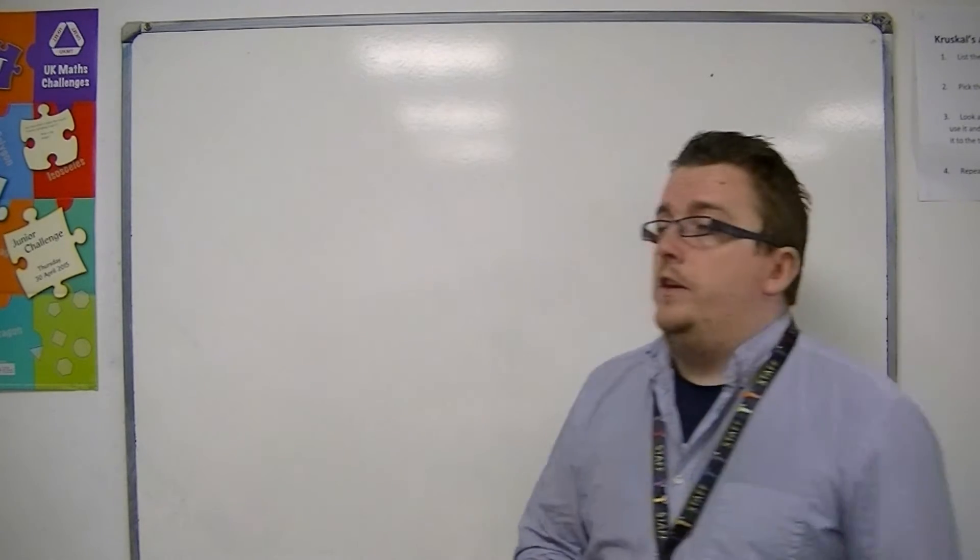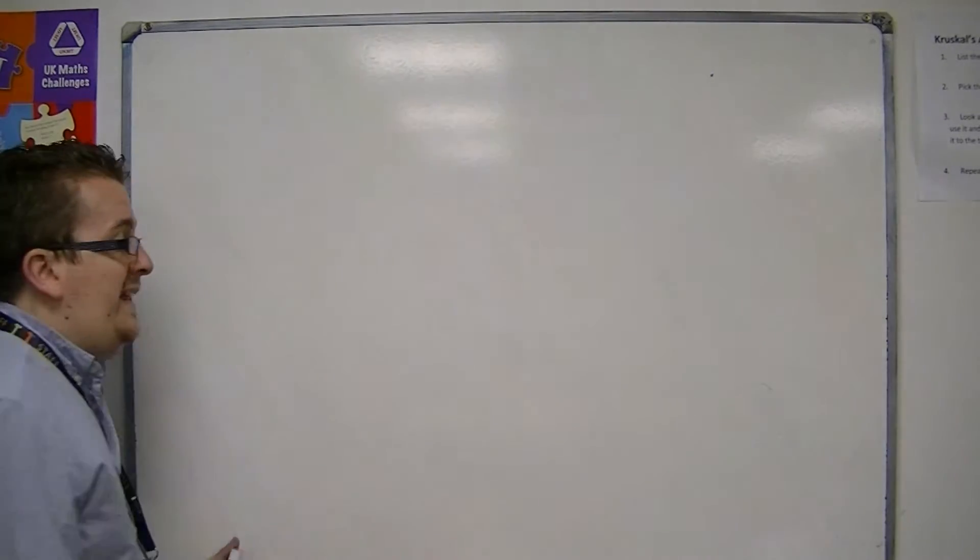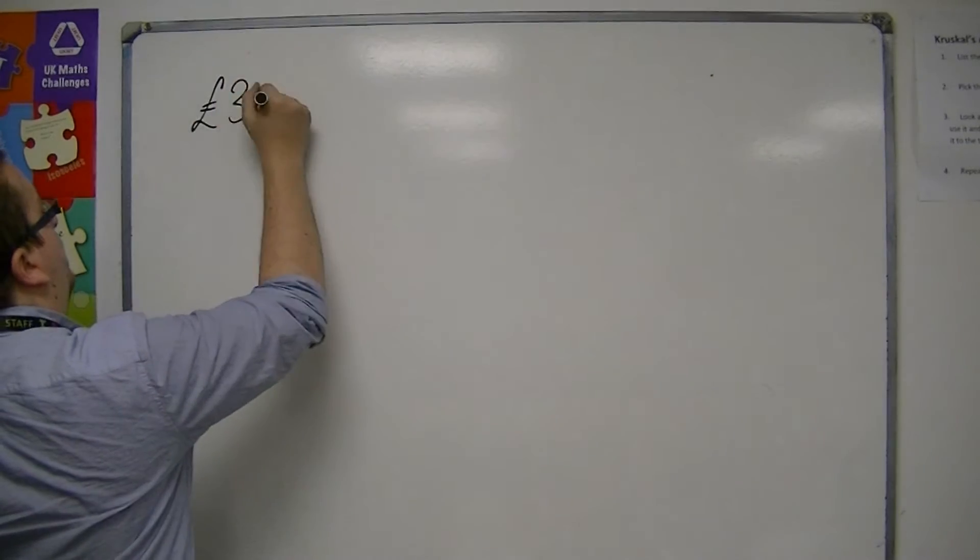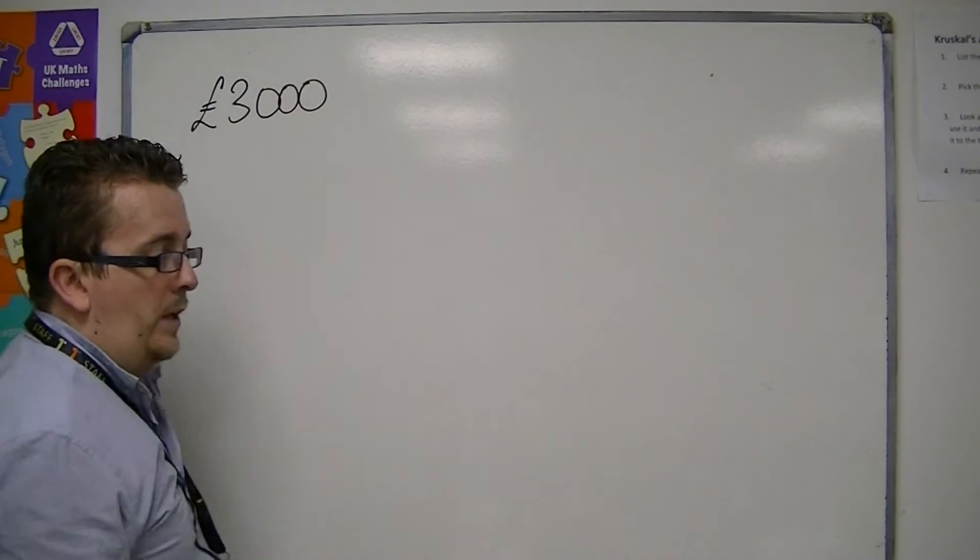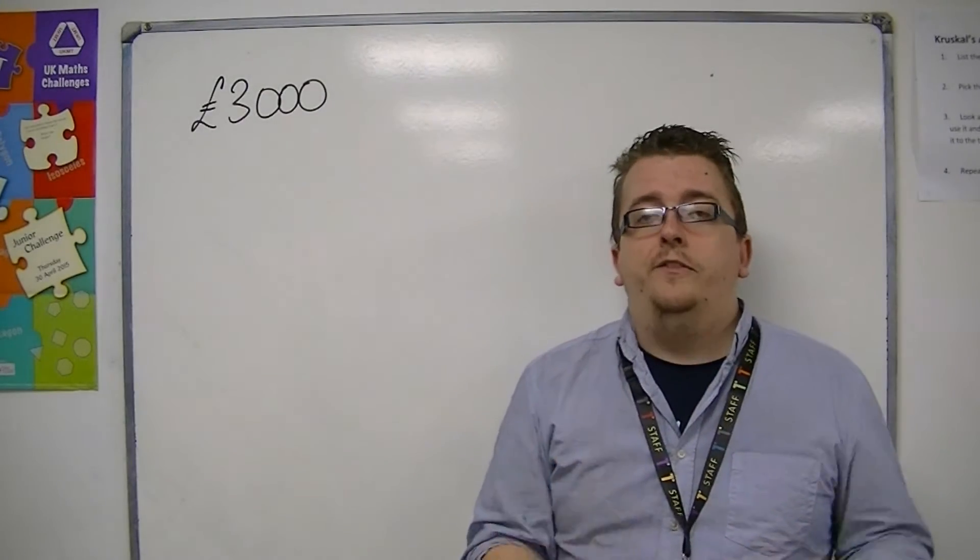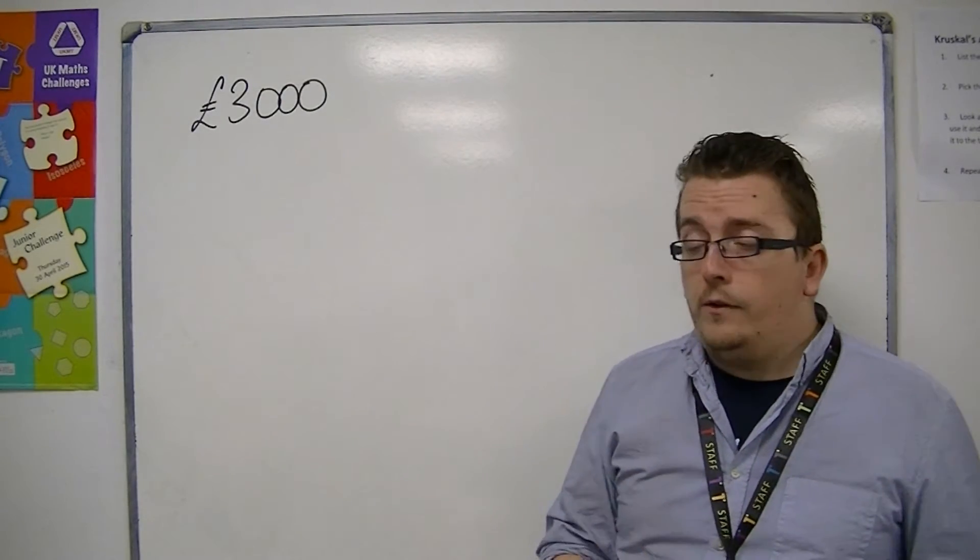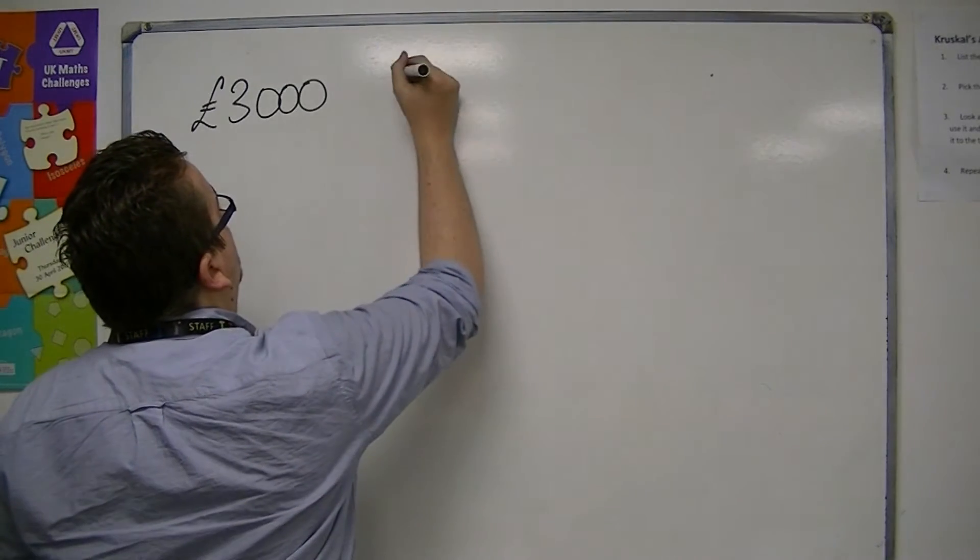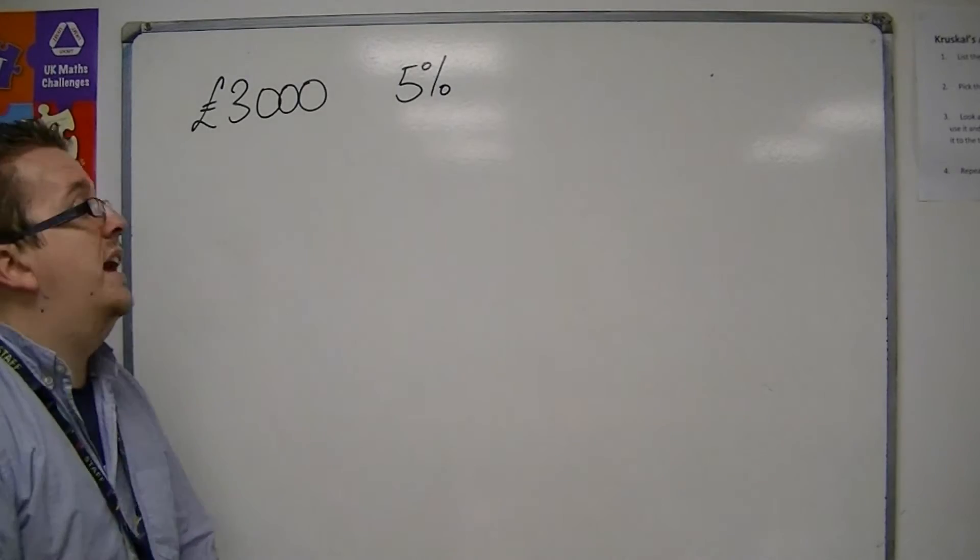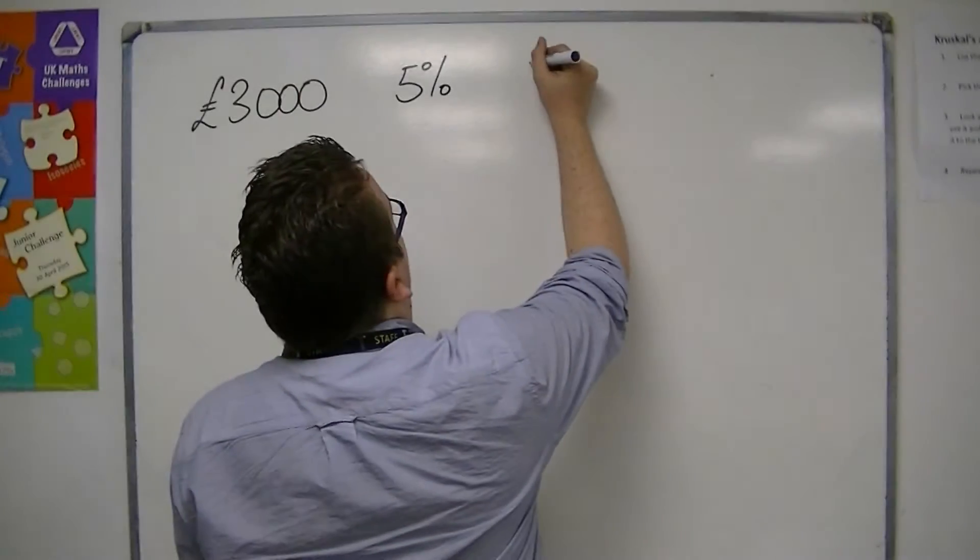So let's say that you paid into an account £3,000. And the interest rate for this simple interest account is at 5% and you pay it in and leave it in the account for 5 years.